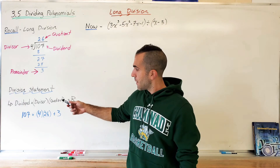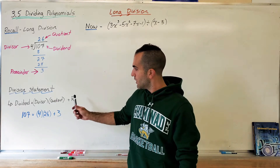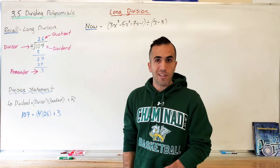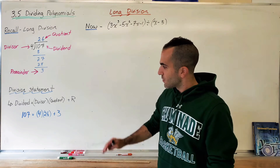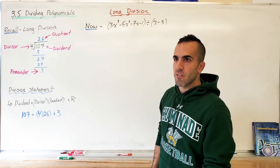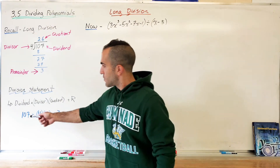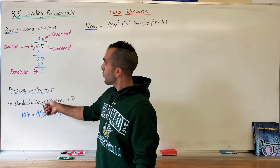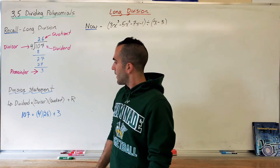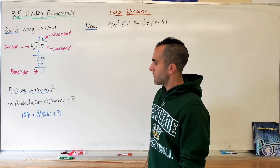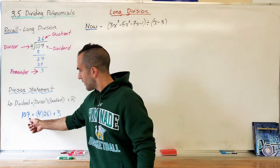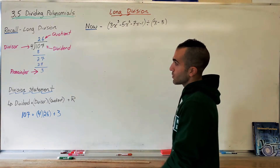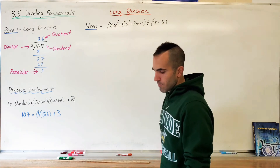The division statement is really important to memorize — it's going to help you solve for any one of these values if the question gives you everything else, and it's also a good way to end your 'therefore' statement. It means the dividend (107) equals the divisor times the quotient, plus the remainder. So 107 breaks up into these two multiples plus that remainder.